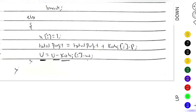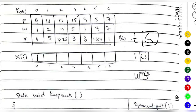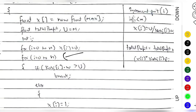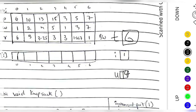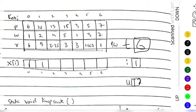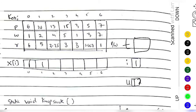We subtract the object's weight from u: 15 minus 1 gives 14. Then i increments to 1. For the second object, the weight is 2. Is 2 greater than 14? No, so we include it, writing 1 in the array. We subtract: 14 minus 2 is 12, so remaining capacity is 12. Total profit becomes 6 plus 10, which is 16.